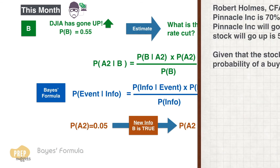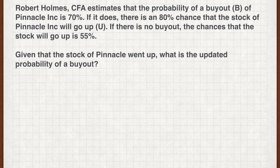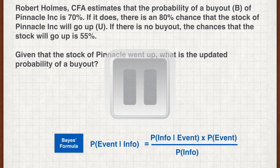Let's have a short practice on Bayes' formula. Robert Holmes estimates that the probability of a buyout of Pinnacle is 70%. If it does, there's an 80% chance that the stock of Pinnacle will go up. If there's no buyout, the chances that the stock will go up is 55%. Given that the stock of Pinnacle went up, what is the updated probability of a buyout? Using Bayes' formula, pause the video now to work out your answer.